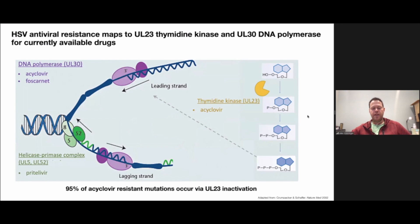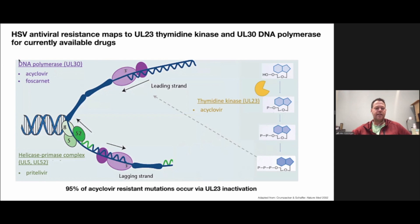There are other approaches. In Europe, and our lab here offers a UL-23 sequencing test. When you think about how acyclovir works: it is activated and phosphorylated by the UL-23 thymidine kinase — the virally encoded kinase — and then integrated by the DNA polymerase. Foscarnet is a directly acting DNA polymerase inhibitor. Most mutations for acyclovir resistance occur via UL-23 inactivation, either through a frameshift or a point mutation that inactivates the enzyme.